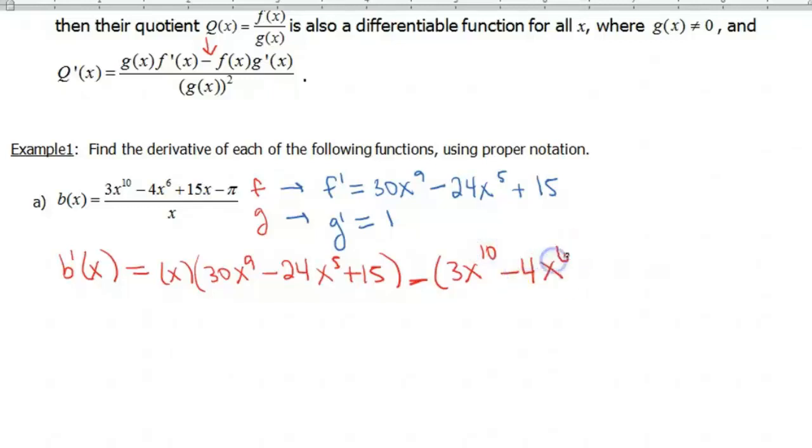3x^10, minus 4x^6, plus 15x, x plus my x, minus π, times the derivative of our denominator, which was 1. And all of this big, crazy messiness here is all divided by the denominator squared.